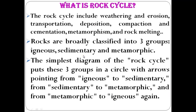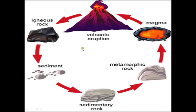In this diagram you can see how rocks are being formed. From igneous rock, sediment is formed, which becomes sedimentary rock. From sedimentary rock you get metamorphic rock. This metamorphic rock melts to form magma, and volcanic eruption gives you igneous rock again — so the cycle continues.